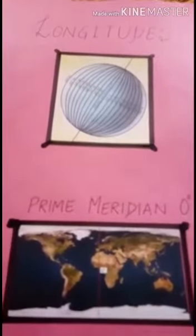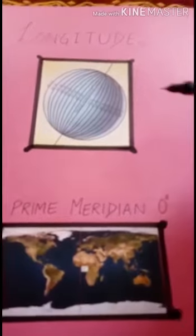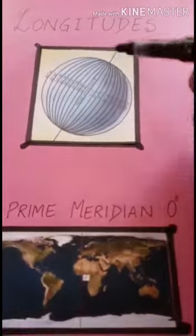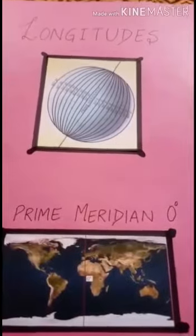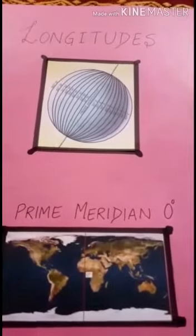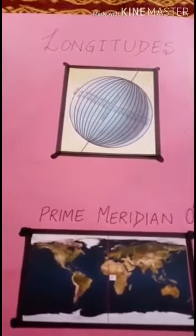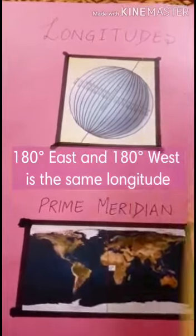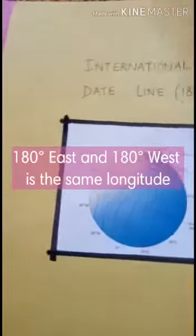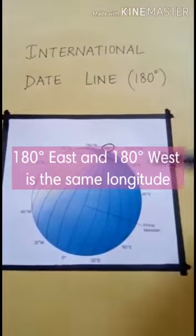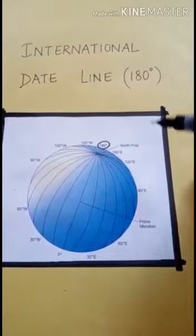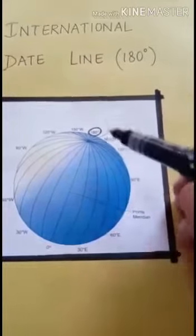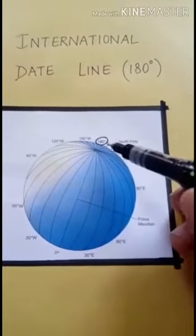The prime meridian divides the earth into two equal parts — the eastern hemisphere and the western hemisphere. However, if you look at the globe, you will realize that 180 degree east and 180 degree west is the same longitude.